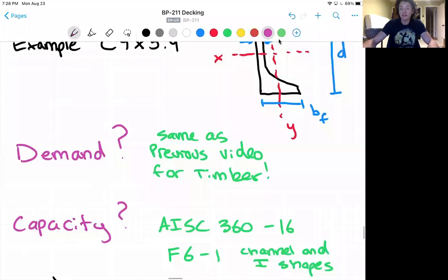And for the steel capacity we're going to use the AISC 360-16 specifications and those are also linked in the text below. Specifically I'm looking at F6-1 for channel and I-shaped beams.